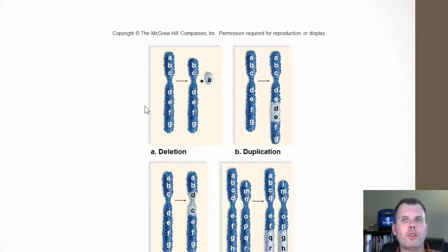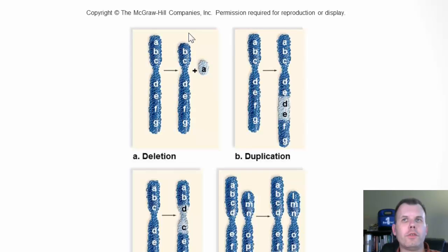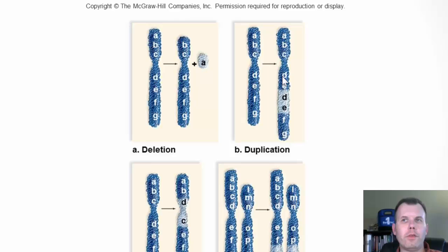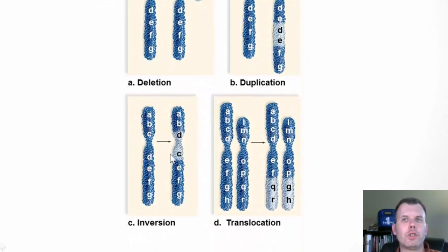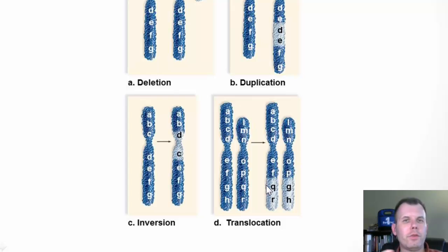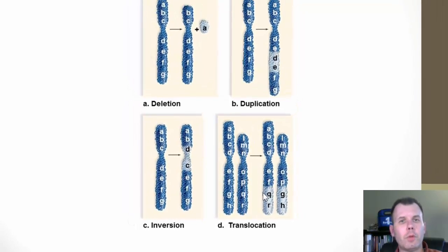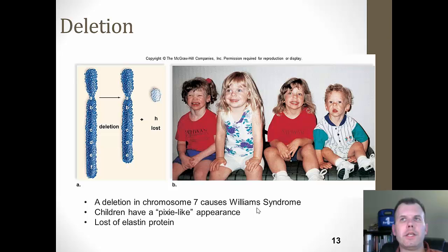Here in picture format: a deletion would be a loss of the gene — in this situation, you lose the A gene. In duplication, you duplicate the D and E genes so you have two copies. In inversion, instead of C and D in order, it's inverted so D is on one side and C on the other. In translocation, G and H end up on another chromosome, and Q and R end up on a totally different chromosome. These are all different types of genetic changes that can occur just to the chromosome structure itself — not changes in number, but changes in the chromosome itself, leading to mutations.